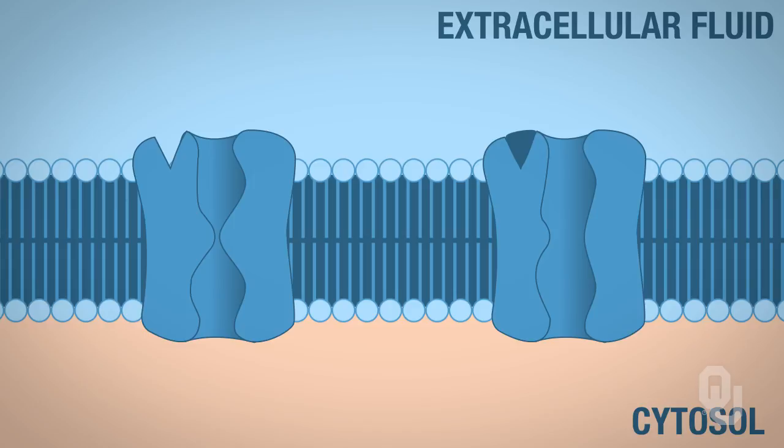So when the channel opens, then you have ions that can move into or out of the cell. Now some of these channels will exhibit specificity. So perhaps you'll only have chloride moving through this channel, or you'll only have sodium or maybe potassium. Or in some cases, you can have both sodium and potassium moving through the same channel.